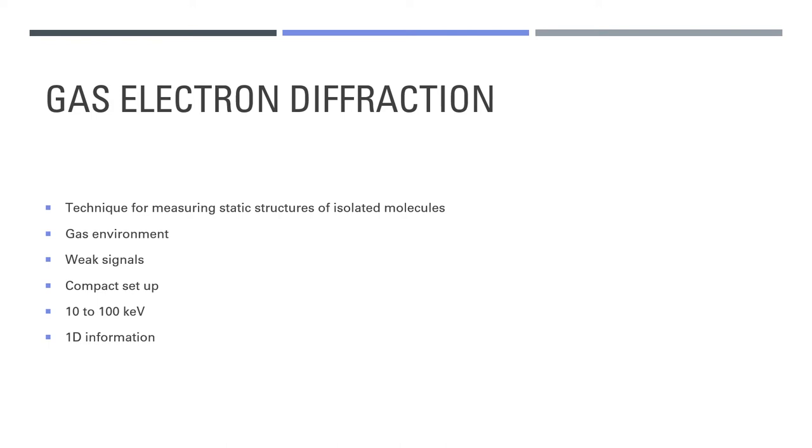In condensed systems, electrons are interacting with a sample with a density of 10 to the 23 molecules per centimetre cubed. In the gas, there are only about 10 to the 17, so the signal is much weaker.